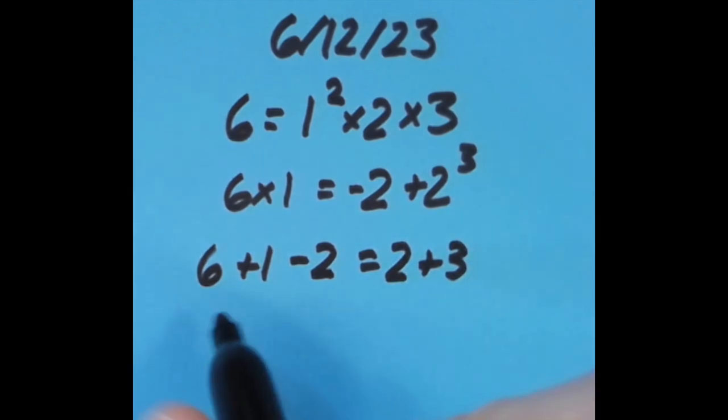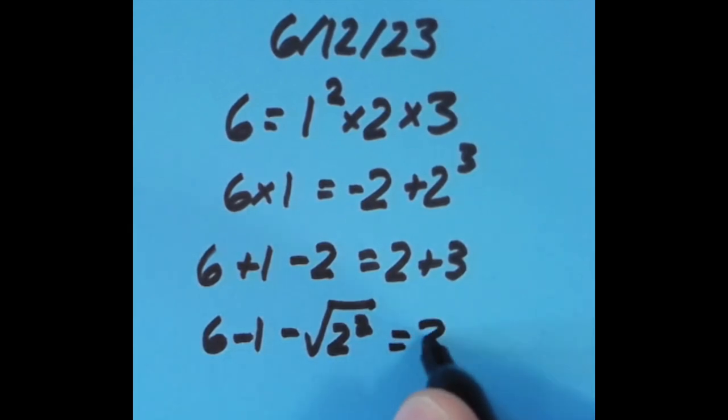And then with the equal sign in the final position, all the way to the right, I said that 6 minus 1 is 5, minus the square root of 2 squared. So 2 squared is 4, the square root of 4 is 2. So you have 6 minus 1 is 5, 5 minus 2 is 3.